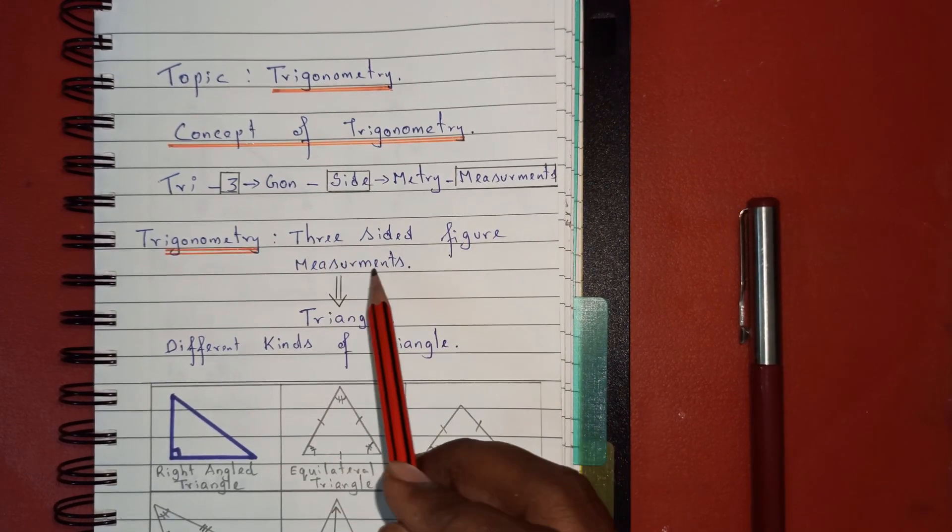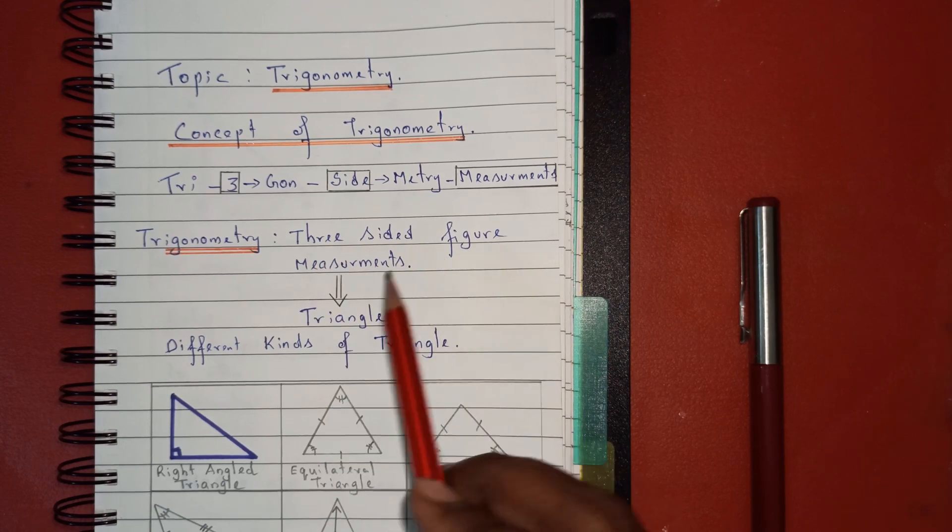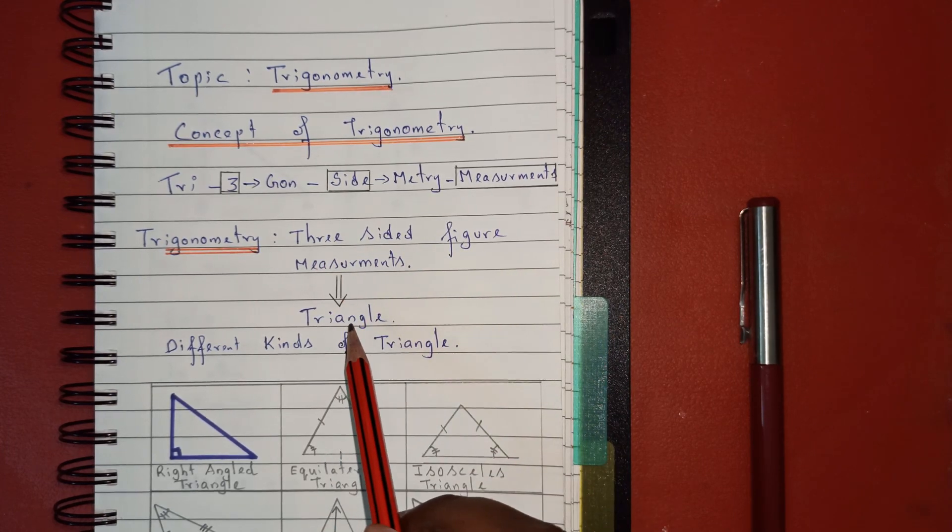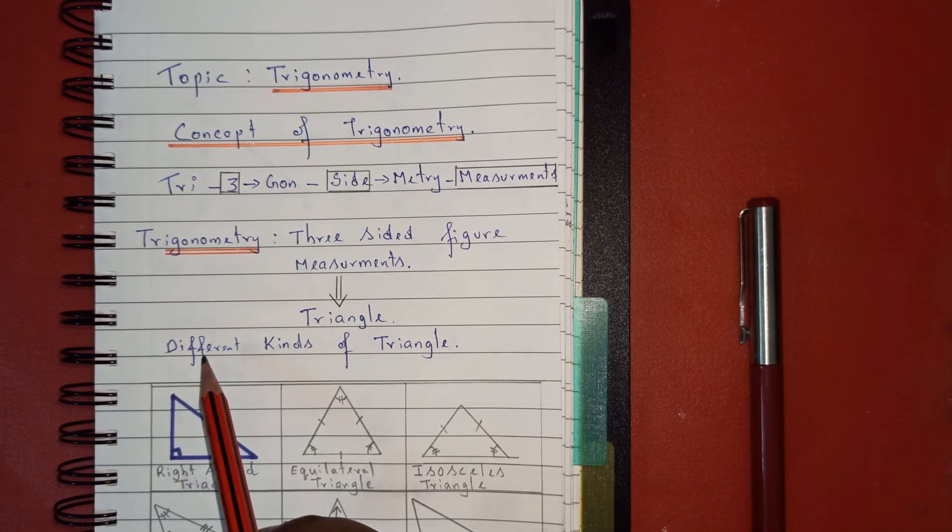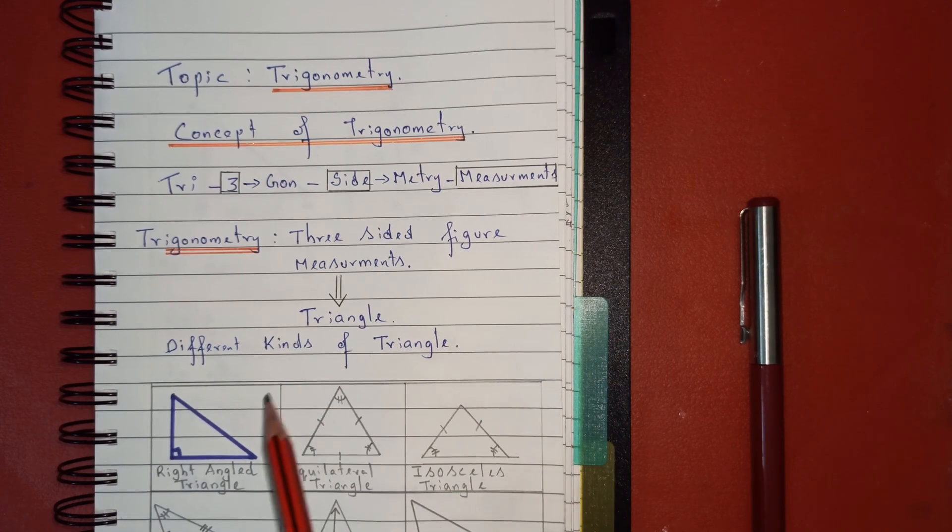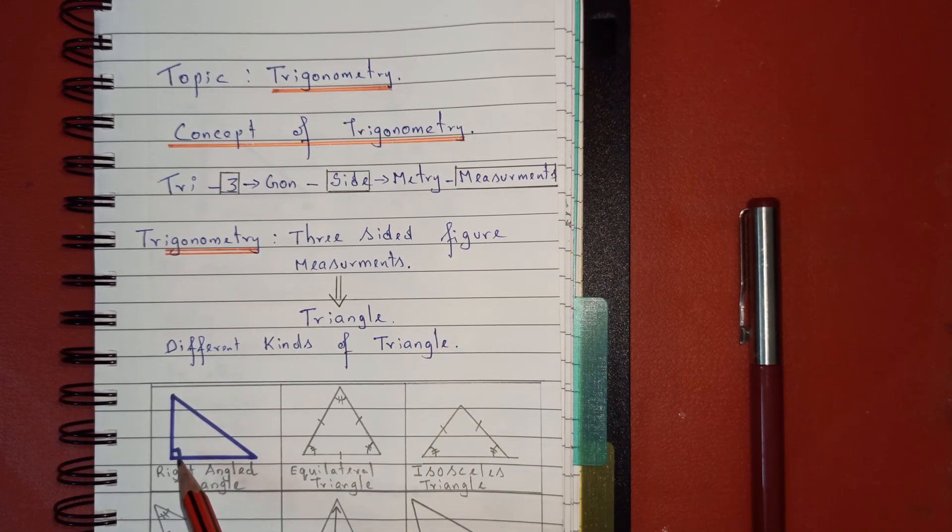Whenever we are talking about three-sided figures, triangle is the one that comes to mind. We have different kinds of triangles, like right angle triangle where one angle is 90 degrees.